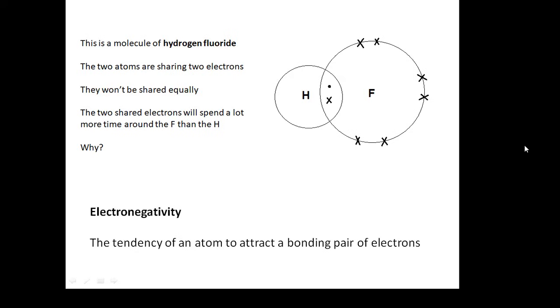Why? Because the fluorine, if you were an electron, I'd rather be around the fluorine because it has a lot more protons. So it's a lot more attractive to the electron. So the electrons are going to spend a lot more time hanging around the fluorine. And so what you'll find is that that end of the molecule will be negative compared to the other end of the molecule.